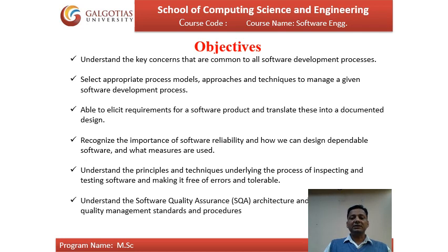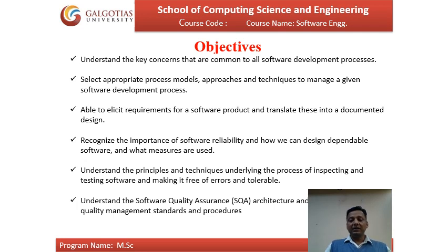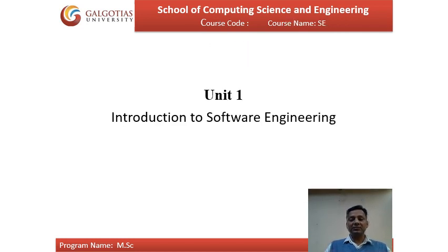The objectives of studying this course are: first, to understand the key concerns common to all software development processes; second, to select appropriate process models, approaches, and techniques to manage a given software development process; third, to elicit requirements for a software product and translate them into a documented design; fourth, to recognize the importance of software reliability and how to design dependable software; fifth, to understand the principles and techniques for inspecting and testing software and making it free of errors; sixth, to understand software quality assurance architectures and quality management standards and procedures.